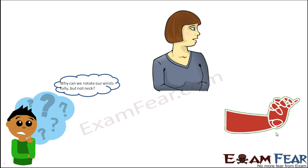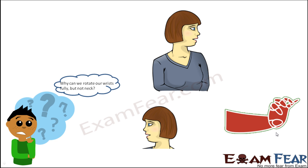When you think of your wrist, you can rotate it completely — just try it out yourself right now. You can rotate it completely, but when it comes to your neck, you can just move it right and left, back and forth to either side, but you cannot rotate it completely. So why that difference? Why does the neck move in a different way than the wrist?